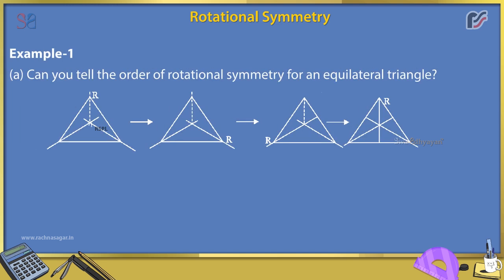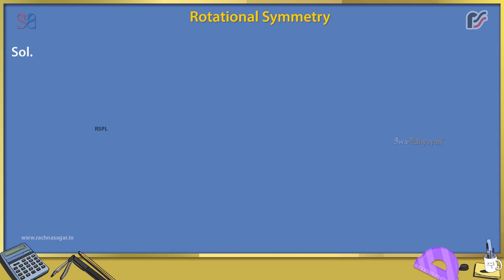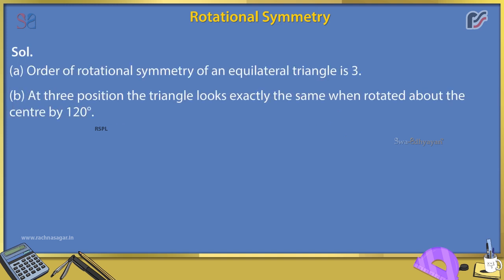Example 1. (a) Can you tell the order of rotational symmetry for an equilateral triangle? (b) How many positions are there at which the triangle looks exactly the same when rotated about its center by 120 degrees? Solution: (a) Order of rotational symmetry of an equilateral triangle is 3. (b) At 3 positions, the triangle looks exactly the same when rotated about the center by 120 degrees.